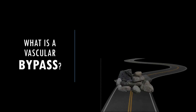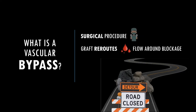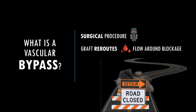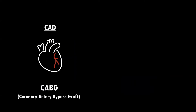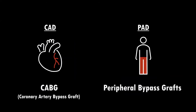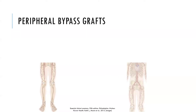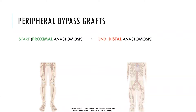A vascular bypass is a surgical procedure that uses a graft to reroute blood flow, usually around a blockage caused by atherosclerosis. Common sites for bypasses are the heart, where CABG surgery is done for coronary artery disease, and the legs for peripheral artery disease. Peripheral bypass grafts are named based on where the bypass starts, or the proximal anastomosis, and ends, or the distal anastomosis.